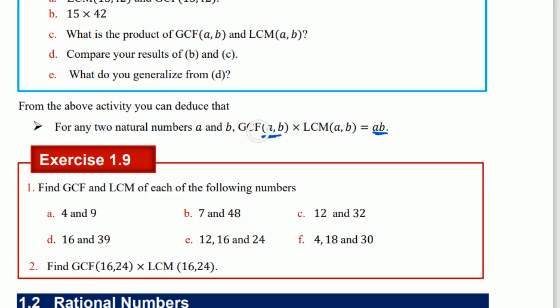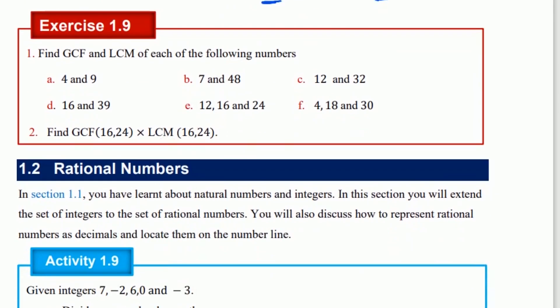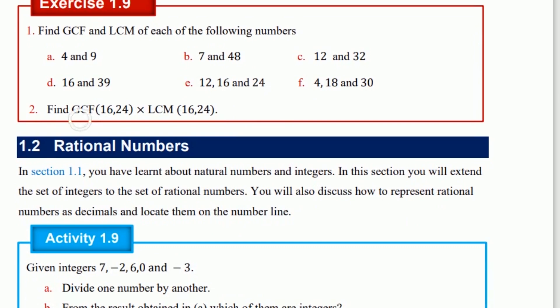Find the greatest common factor of 16 and 24, and the least common multiple of 16 and 24, using this relationship.